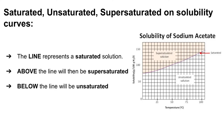Saturated, unsaturated, or supersaturated on a solubility curve: the line itself represents a saturated solution. Above the line, there is potential for a supersaturated solution — though that depends on how the solution was made and what is occurring. Below the line, the solution is unsaturated.